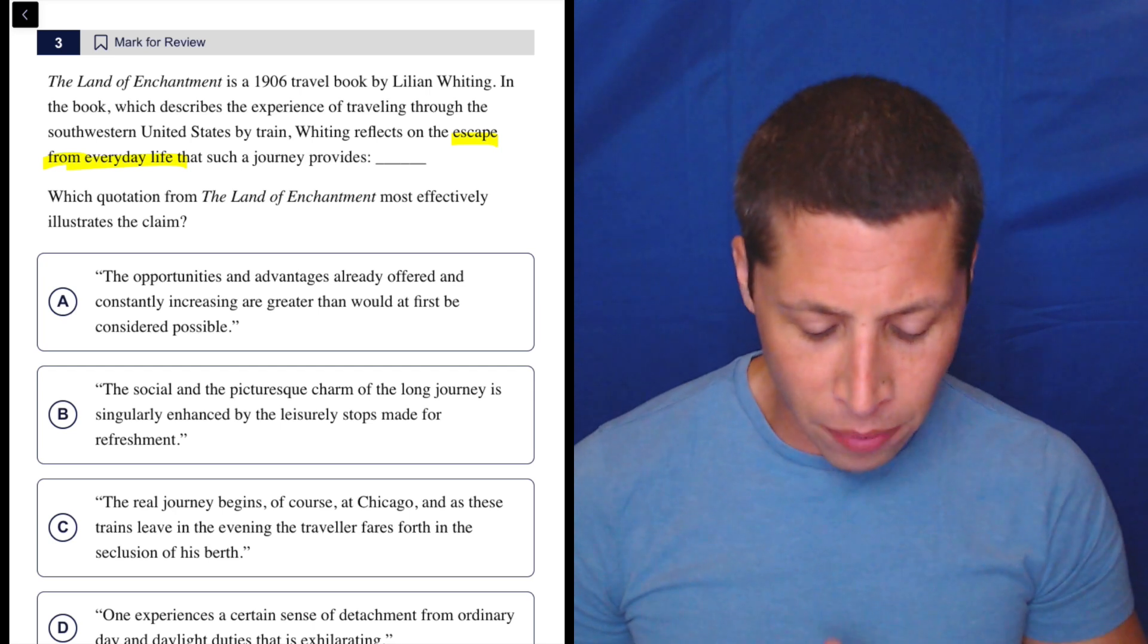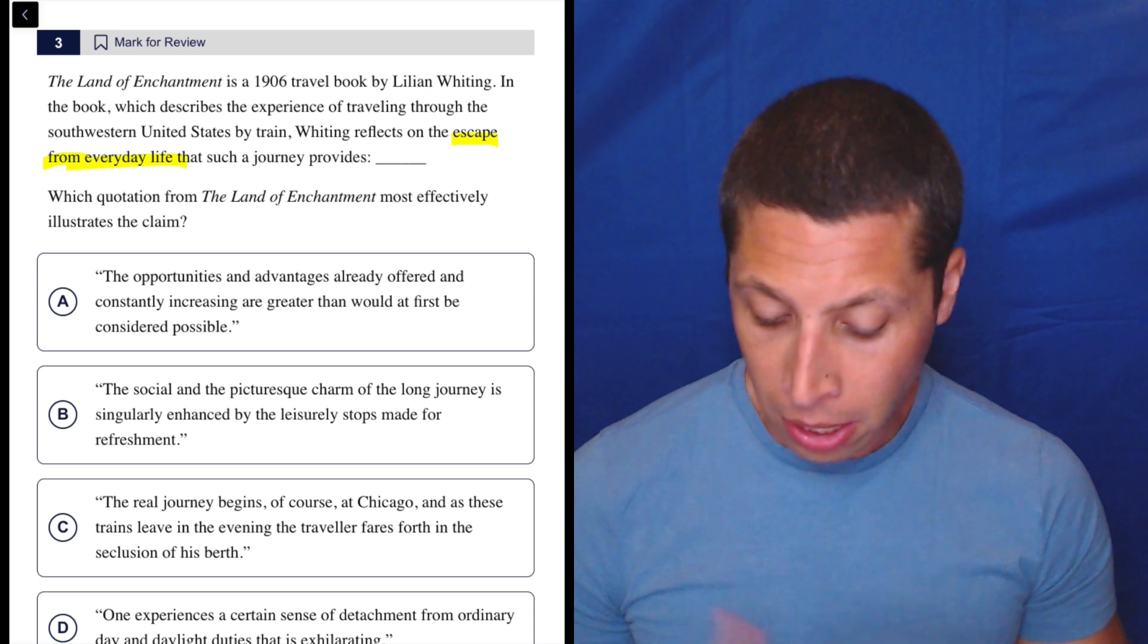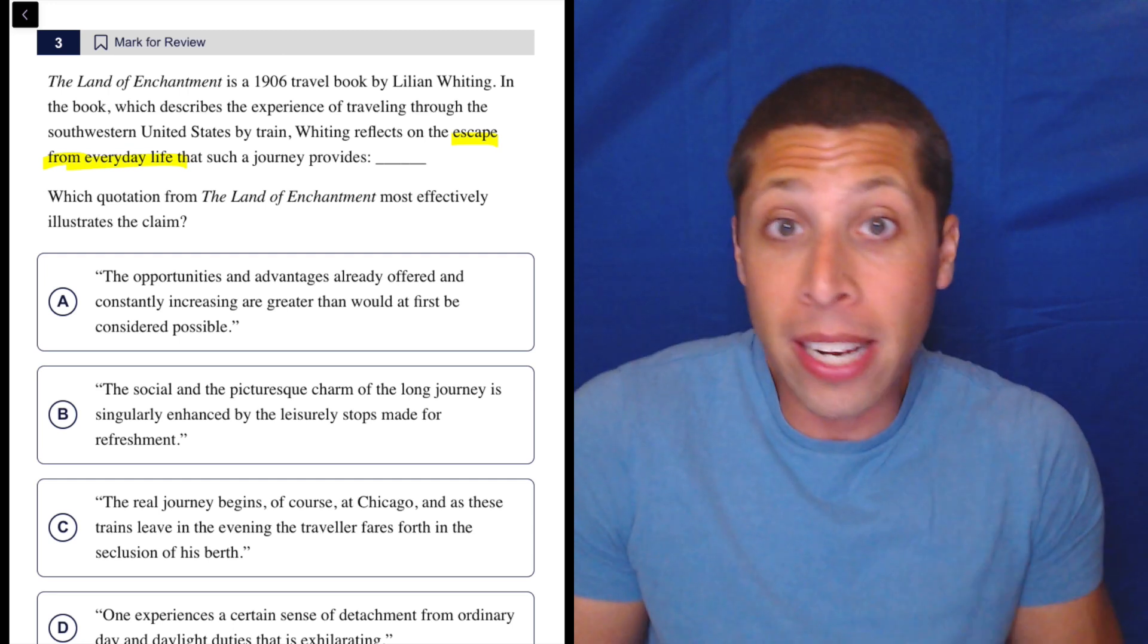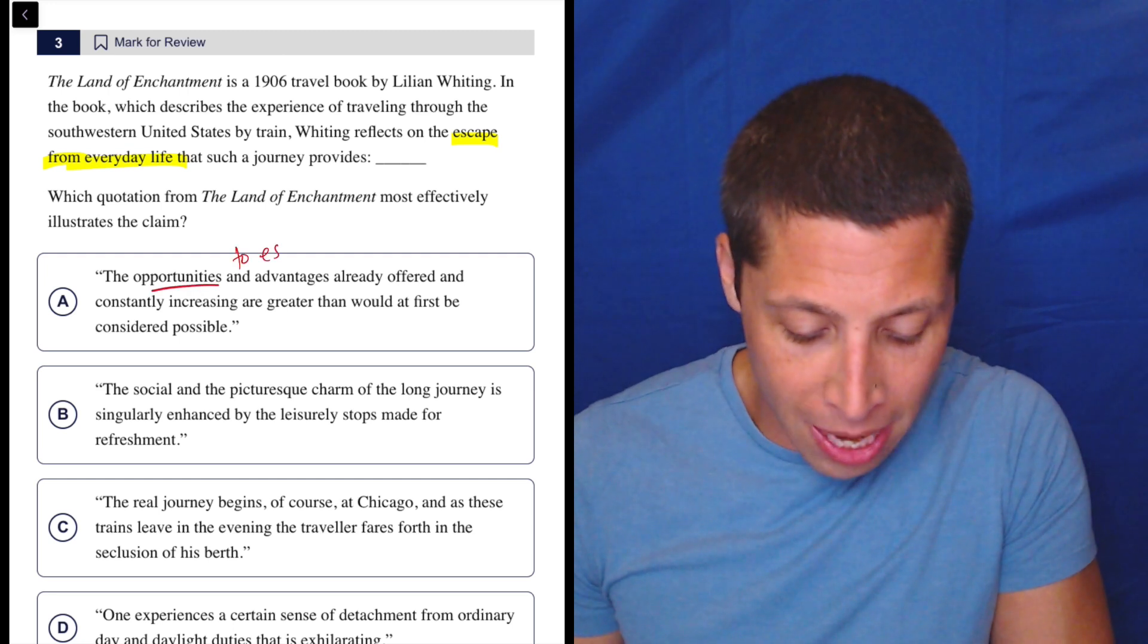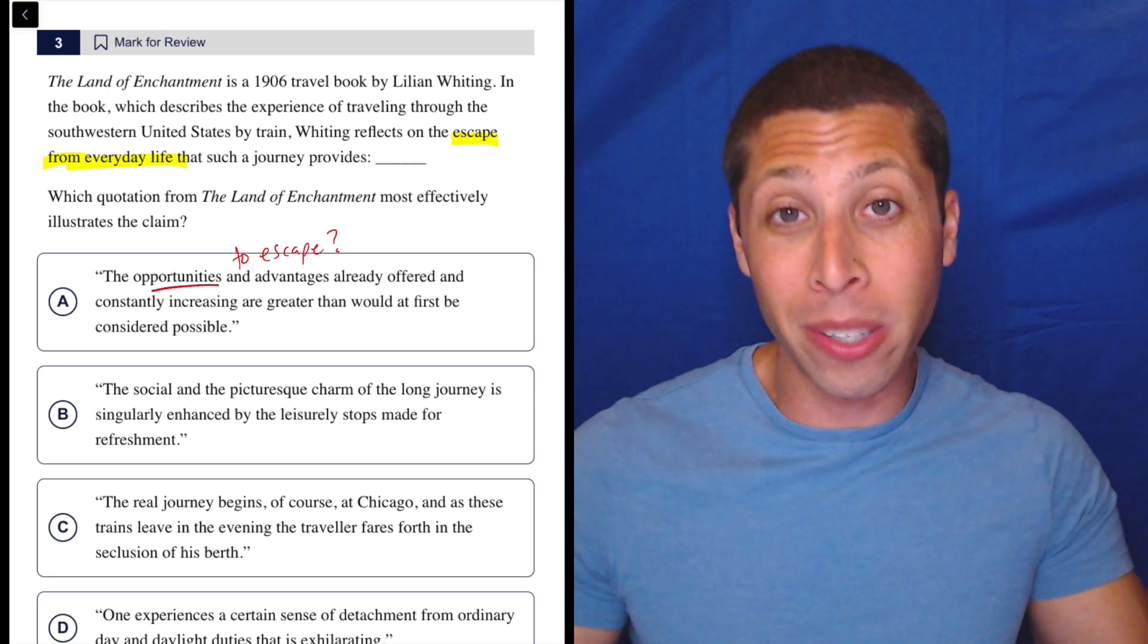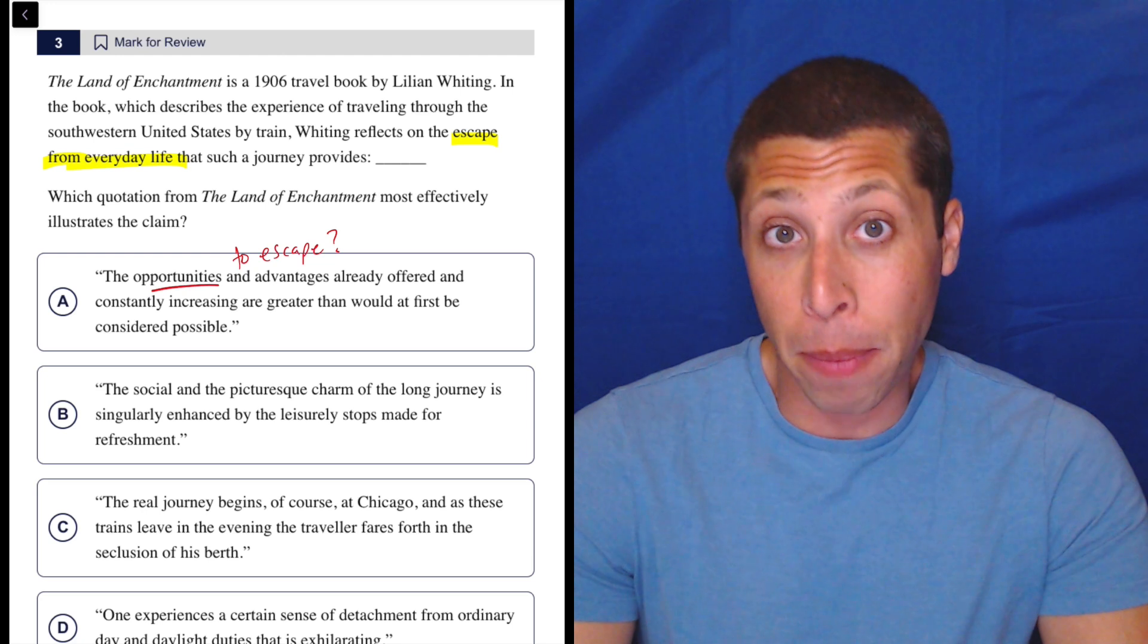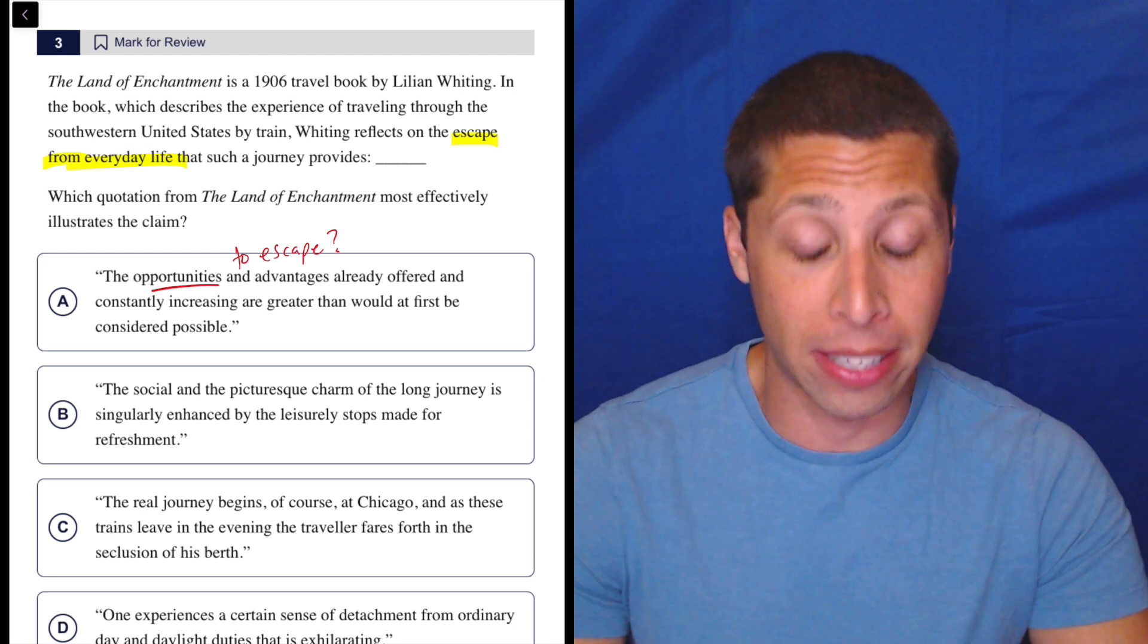So let's look at A. The opportunities and advantages already offered and constantly increasing are greater than would at first be considered possible. So I guess the opportunity is provided by the train, but that's not escaping from anything. Or maybe it is. Maybe it's an opportunity to escape. The fact that it doesn't say that, the fact that there's nothing strong in that choice that connects back to the idea of escaping from life, I don't know. Maybe I'm stretching it. So this doesn't seem like a good option to me. If nothing else is better, I might pick it, but I really want to have that strong word that stands out in the choice and connects back to the claim in the passage.